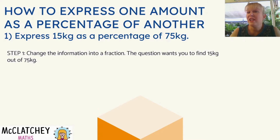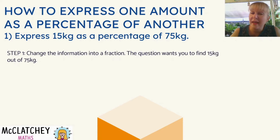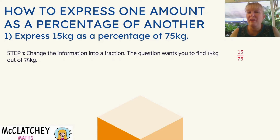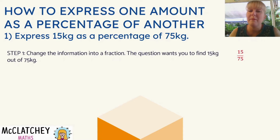We're going to change this firstly into a fraction. Now, 15 kilos is the smaller amount and we want to find that as a percentage of the other amount, 75. So whatever we're starting with, we're going to put as our numerator, and we're trying to find that as a percentage of 75 kilos, which becomes our denominator.